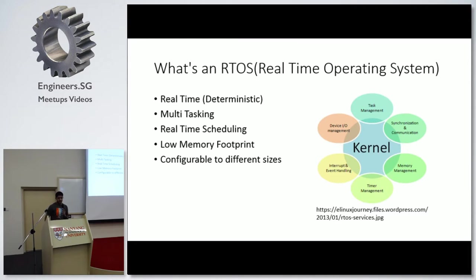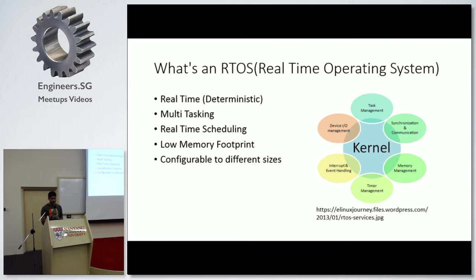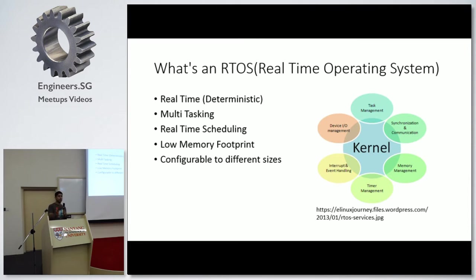What is RTOS — a real-time operating system? First, it's real-time, and one of the examples given was the NeoPixel. It's a pretty tricky thing to program, especially if you have a Raspberry Pi. And it has to multitask. You need a lot of different tasks running in parallel, real-time scheduling, wherein you bring different tasks at different time lapses or time frames. And you also need a low memory footprint.